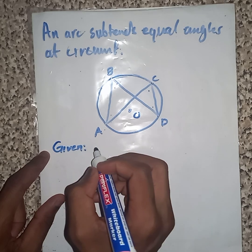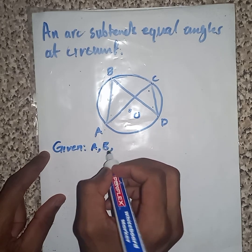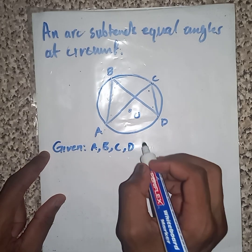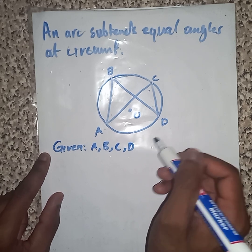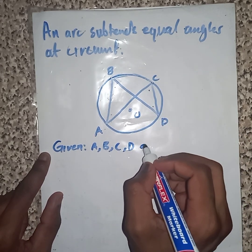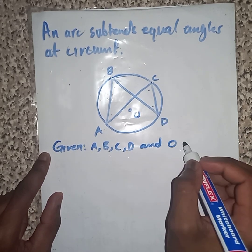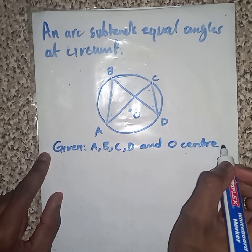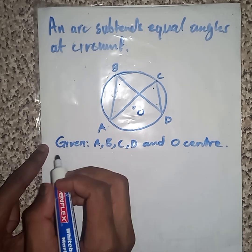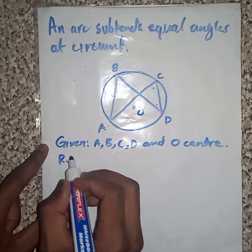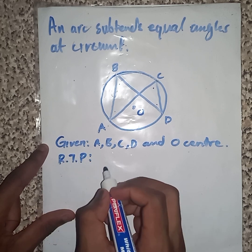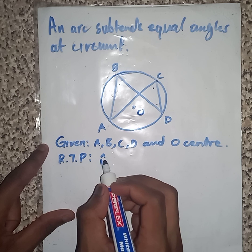We have A, B, C, D. Those are your points on your circumference, and we also have the center O. Now we must prove, required to prove, we must prove that angle B...